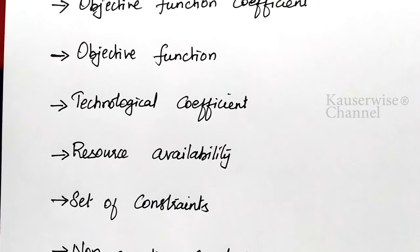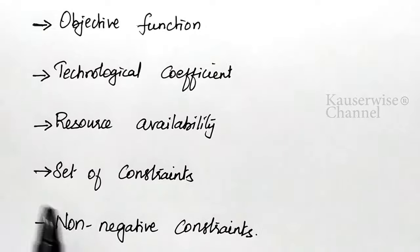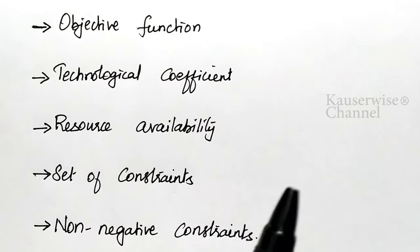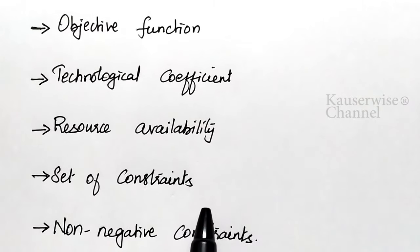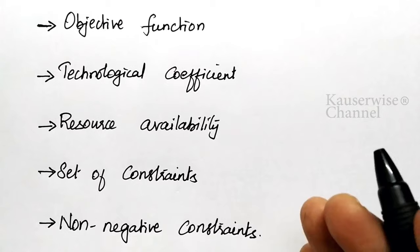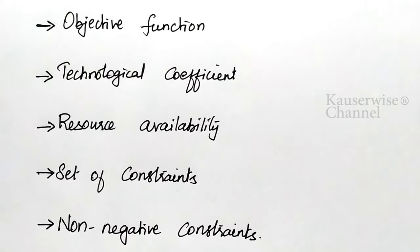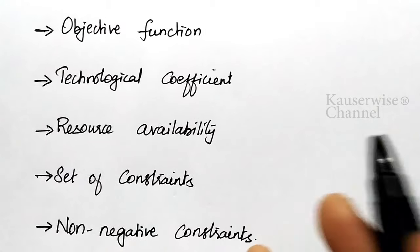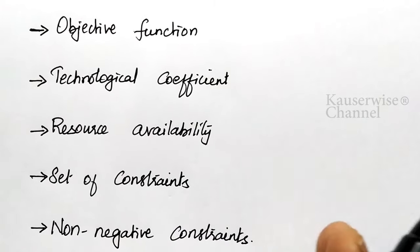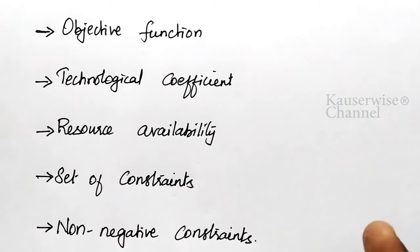During a particular period, what are the resources available to complete the task? That is called resource availability. The next one is set of constraints: a constraint is a kind of restriction on the total amount of a particular resource required to carry out the activities at various levels. In the LPP model there will be many such constraints, and these constraints will limit the levels of achievement of different decision variables.